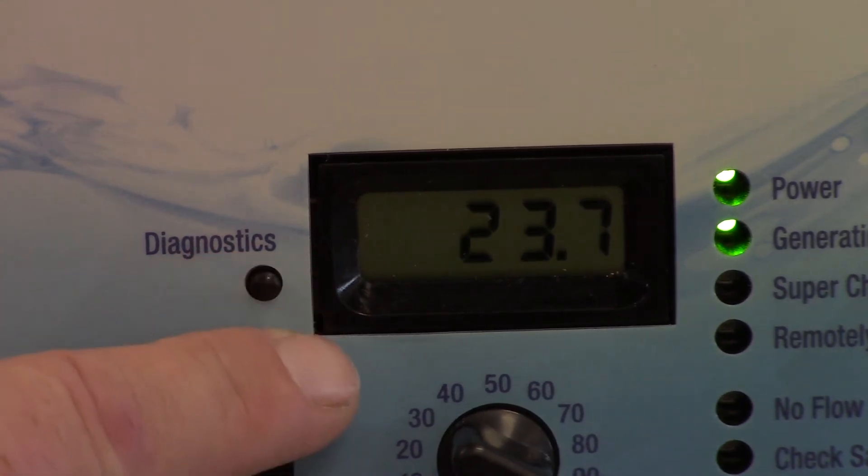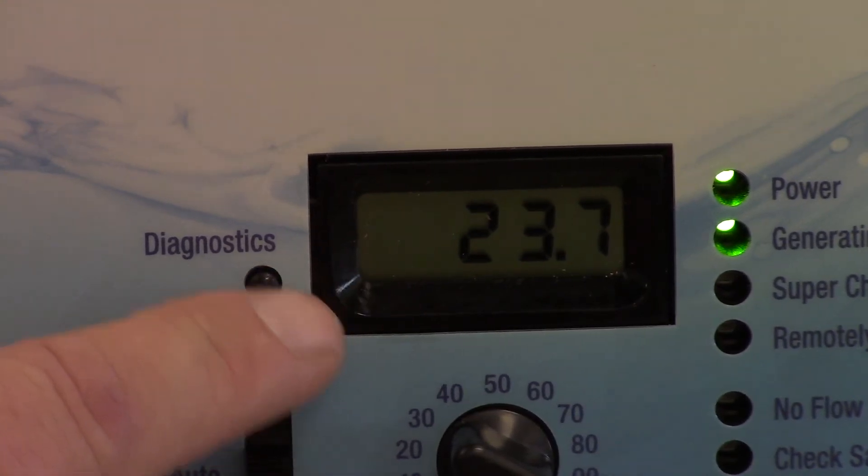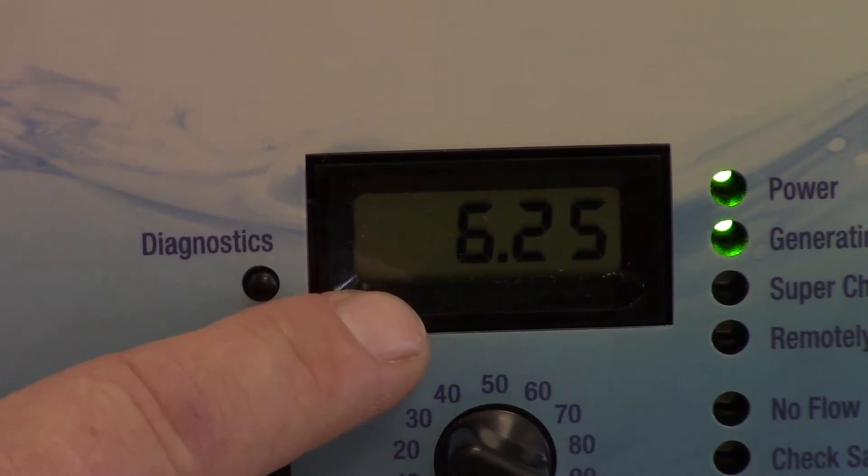If I push the button one more time we have 23.7. That is the amount of volts that are going through the cell right now. Push it one more time, 6.25 is the amount of amps going through the cell.